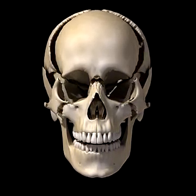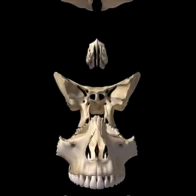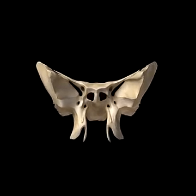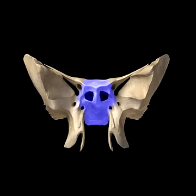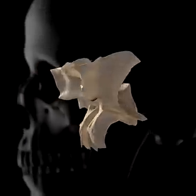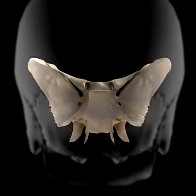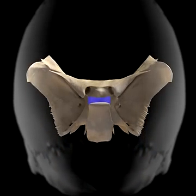Other bones become more visible only when looking inside the skull. The sphenoid bone makes up the anterior base of the cranium. It is a butterfly-shaped bone with a central body and two pairs of laterally projecting wings. These wings form portions of the orbit. The body of the sphenoid features a depression known as the sella turcica, which houses the pituitary gland.